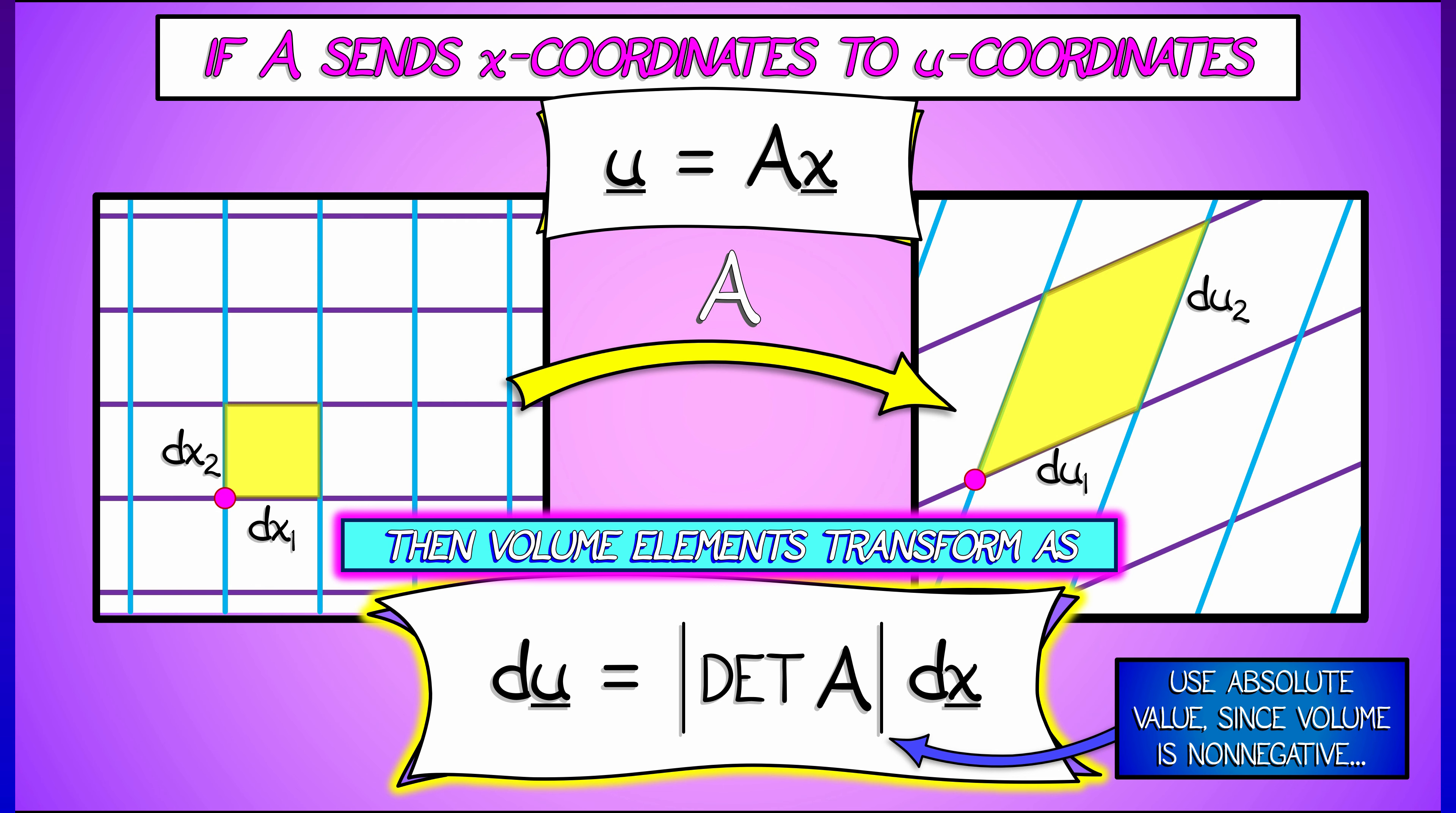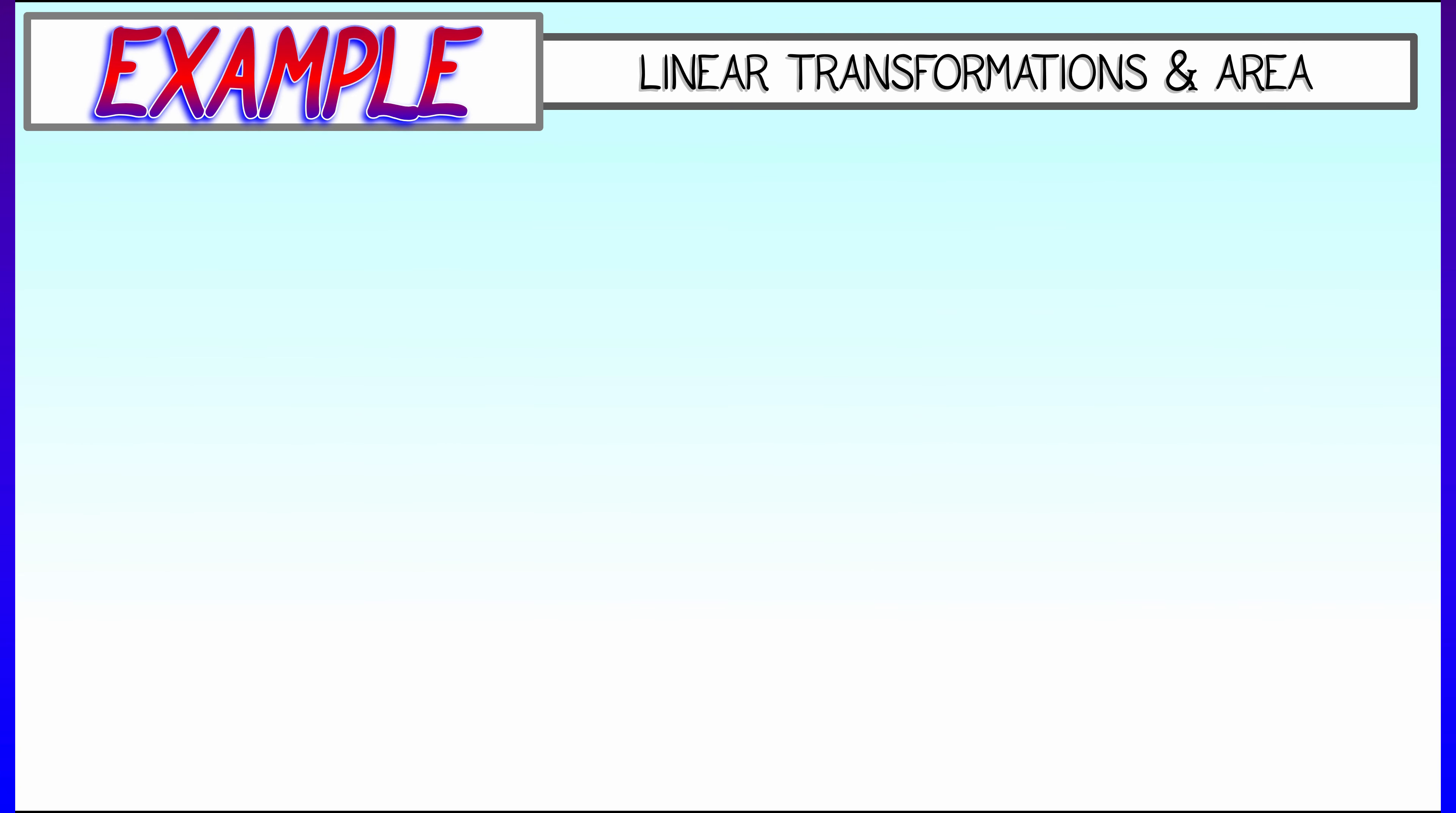du is the determinant of A times dx, where I'd better put that determinant in absolute value since we're talking about volumes. And then if I integrate both sides of this equation over the appropriate domains, this tells me how volumes change.